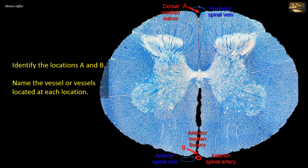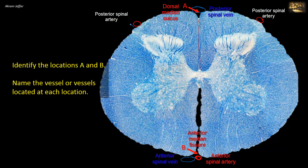Only a vein is seen posteriorly. The posterior spinal arteries, which are two arteries, are located at the posterolateral sulcus and not in the midline. Each one is accompanied by a posterolateral vein.